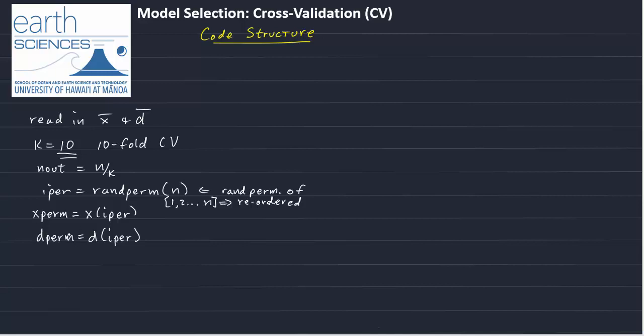So xperm would be x with the permutated indices, which is this vector right here. And then dperm is equal to d with the indices, again, permutated with this vector iperm. So now we've established our fold of 10. We know the size of each of the data sets we're leaving out. And we've done our random permutations so we can randomly select our leave out parts of our data.